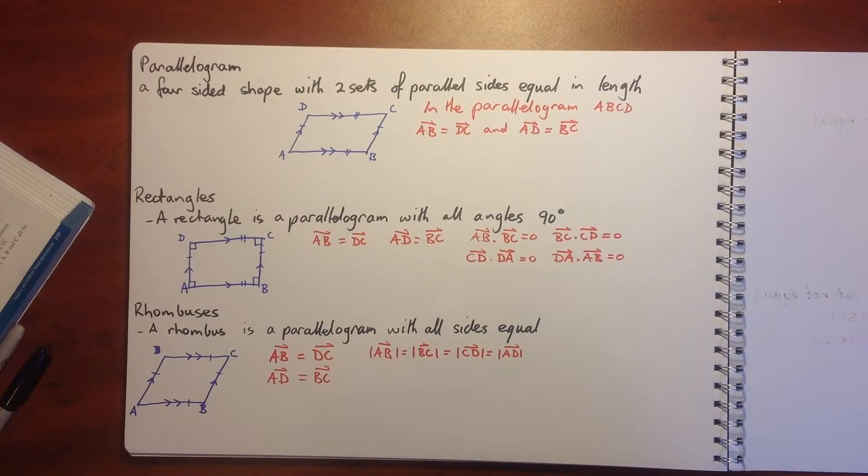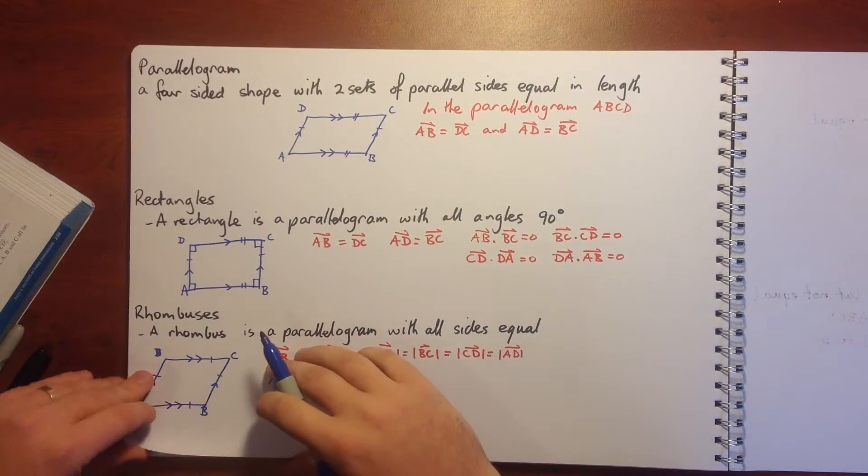A rhombus is a parallelogram with all sides equal. So AB equals DC, AD equals BC, and all our magnitudes are the same. The magnitude of AB is the same as the magnitude of BC, which is the same as the magnitude of CD and AD.